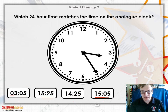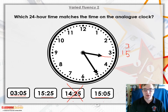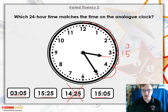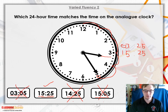Looking at the hour hand — it's past the three but not past four, so this time is going to be 3, or if we add 12 it could be 15. So it's not going to be the option with 2 in the hours. Counting the minute hand in fives: 5, 10, 15, 20, 25 — that's where our minute hand is. So we've got 3:25 or 15:25. We can see that 15:25 matches, so the other options are wrong.